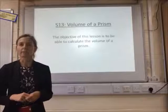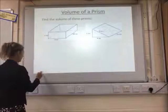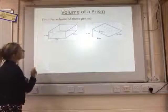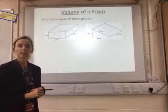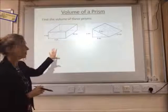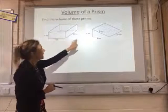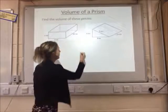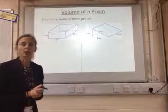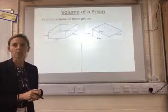In this video we're going to look at finding the volume of a prism. We've got two different shapes today: one that's a cuboid, which is a rectangular prism, and then we've got a triangular prism as well. With both it's the same idea — we're going to find the area of the front and times it by how far it goes back.